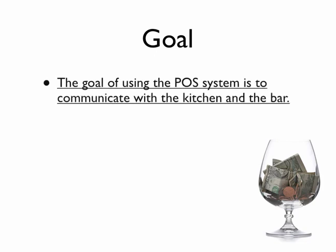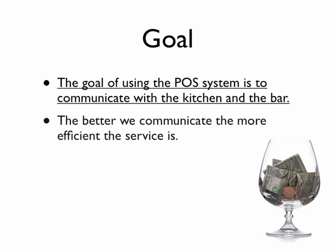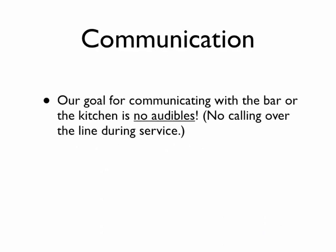Let's talk about what the POS system is there to do. The goal of using the POS system is to communicate with the kitchen and the bar. The better we communicate, the more efficient our service is, and efficiency equals more money for you at the end of the night. Our goal for communicating with the bar or the kitchen is no audibles — no calling over the line during service in the kitchen, no calling over the bar to the bartender whenever it can be avoided. We want to get everything on that check that prints out for the bartender or for the kitchen, so those drinks are ready for us when we arrive.